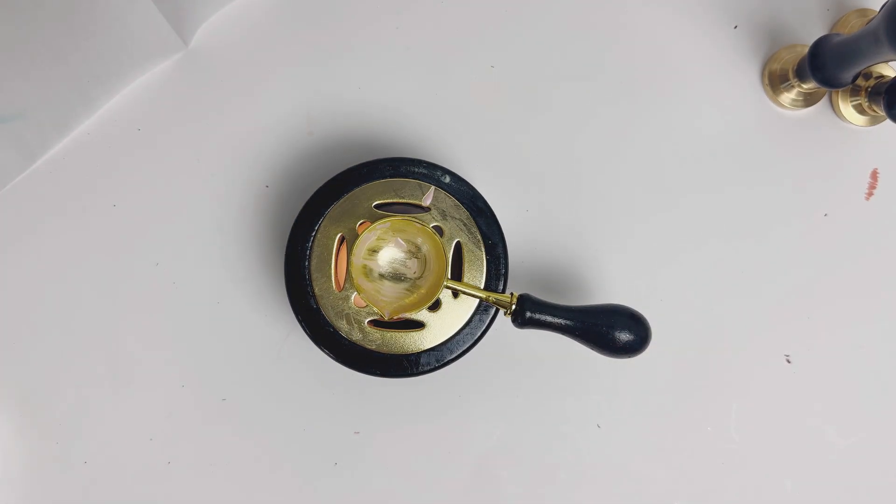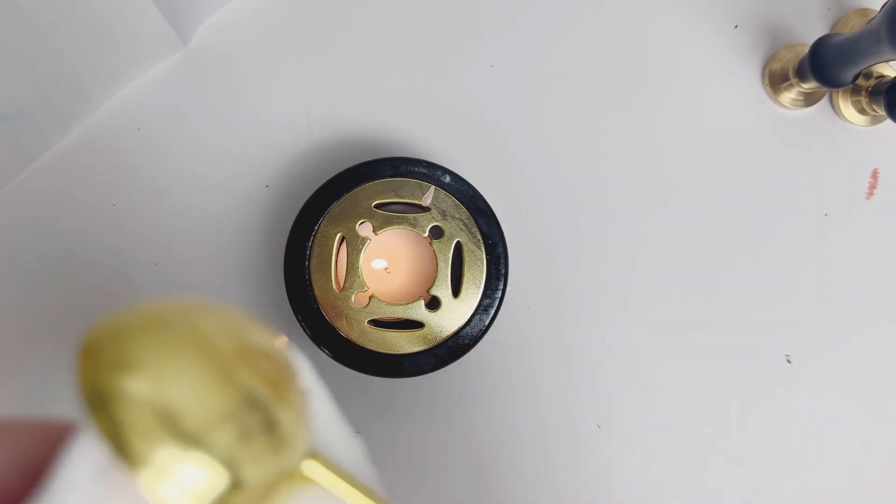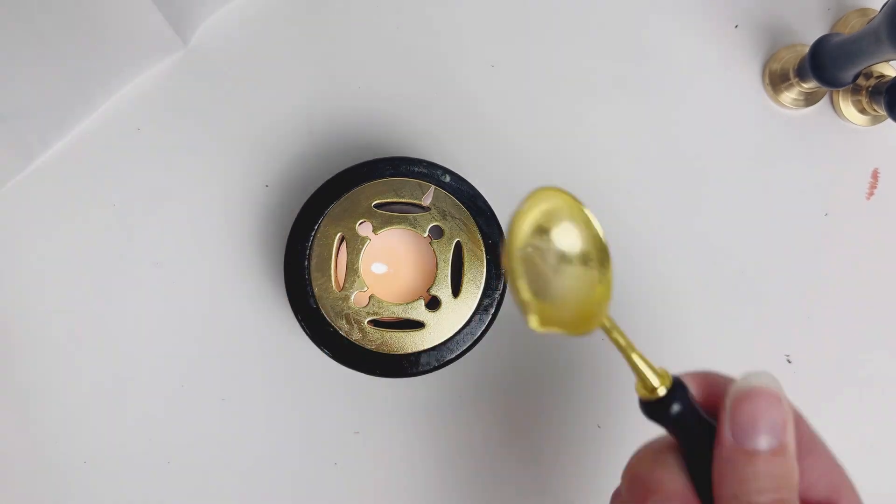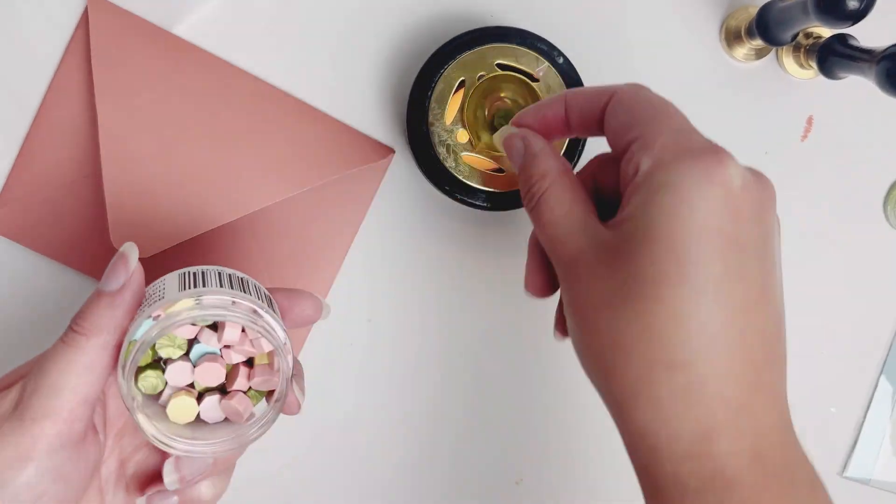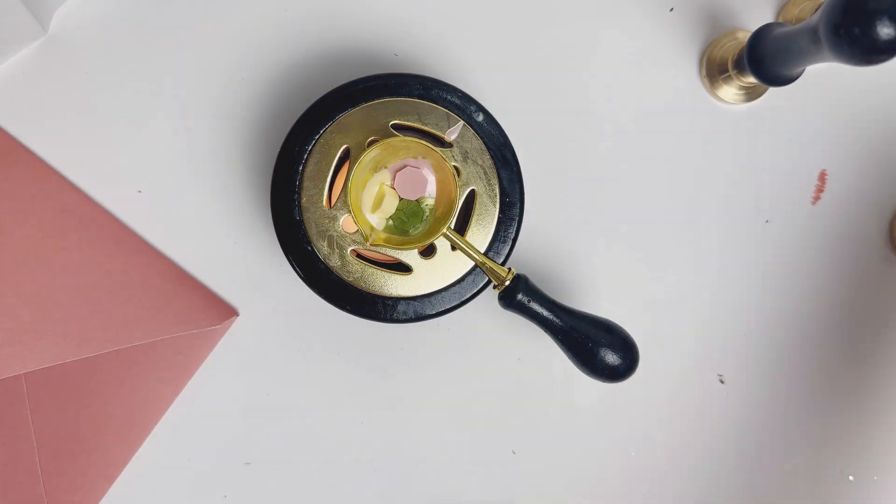You're gonna place your wax melting furnace over your tea light and then place your spoon on top of the wax melting furnace. So then here I'm just grabbing - I have a lot of paper towel, a little bit damp - to wipe off the excess there.